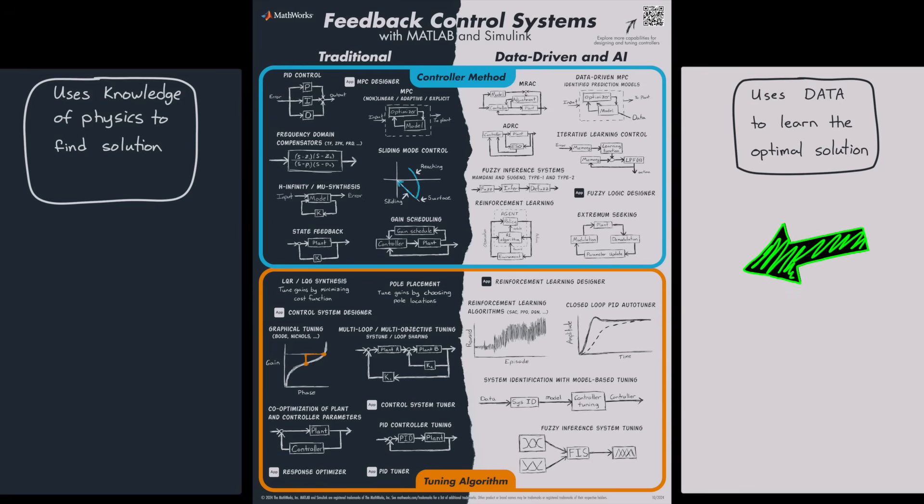Now, data-driven controllers often still require some physical understanding of your system. And for traditional controllers, people still need data in some way. So it's not a perfect classification. But for the most part, the controllers on the right use data to learn the best solution. And the controllers on the left, the best solution is derived from knowledge.